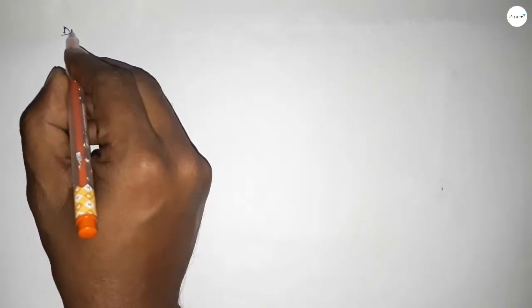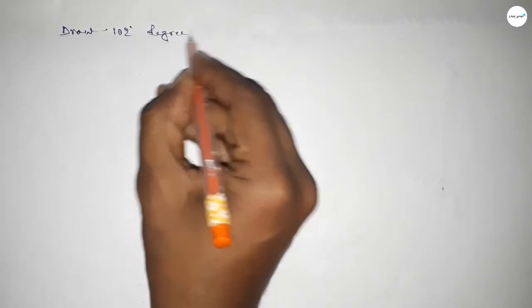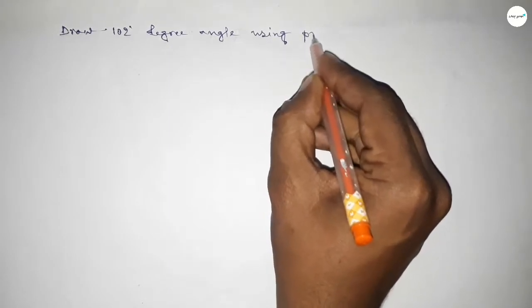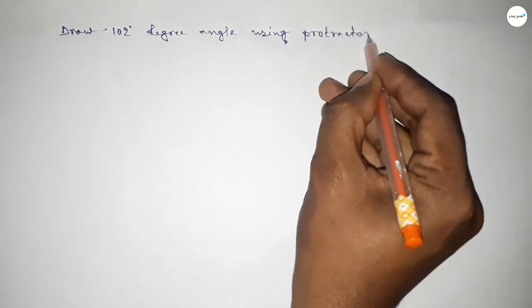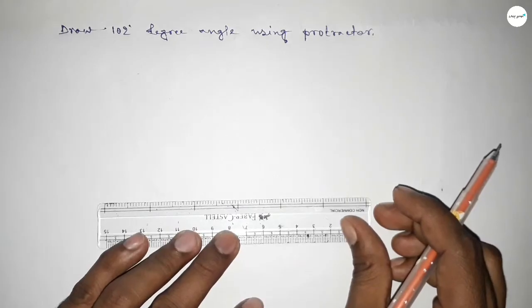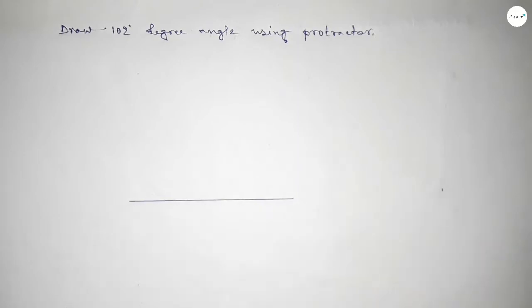Hi everyone, welcome to SI Share Classes. Today in this video we have to draw a 102 degree angle by using a protractor. So let's start the video. First of all, we have to draw here a straight line of any length.